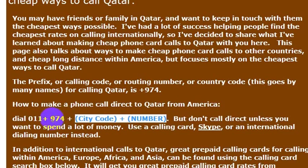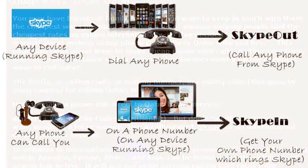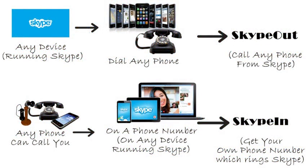Again, the country code for Qatar is 974. But I wouldn't really recommend calling direct — your phone company will charge you a lot of money. If you want to call a phone number, I really recommend using Skype.